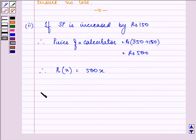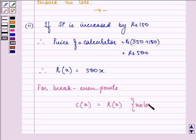For break-even points, our cost function should be equal to our revenue function. This is a case where the firm is not incurring any loss and it is not earning any profit also. That means it is a no loss, no profit situation. Remember, this is the meaning of break-even point. So let us equate it.